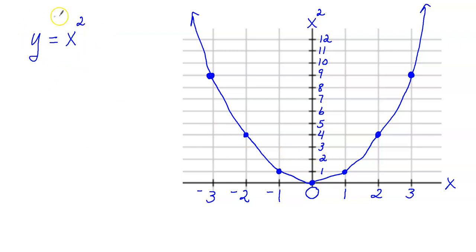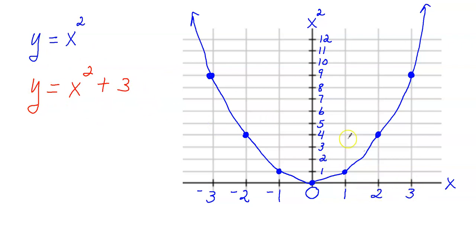What do you think I would do with the equation if I want to move all the points on this graph up 3 units? Well, the new equation would look like this — I would add 3 to the x squared value: x squared plus 3. So here the x squared value is 9, that's 9 plus 3, which is 12. So I'm going to translate this point up to 12.